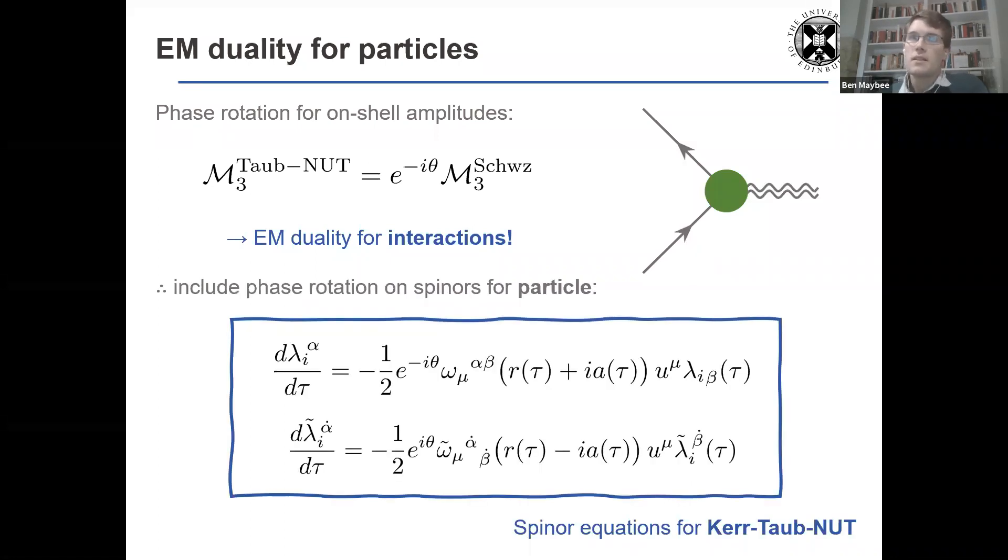So therefore, with the spinors, we're now going to have an electromagnetic duality rotation acting for the particles that the spinors equations are representing, as well as the background that they are scattering off. So this, combined with the Newman-Janis shift that we have coming straight out of the effective worldsheet action, is going to give us spinor equations for Taub-NUT.